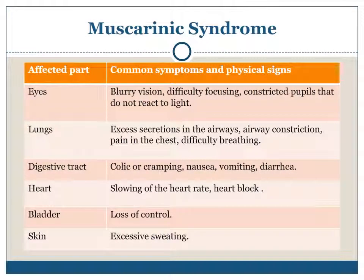Muscarinic syndrome — affected parts and common symptoms: Eyes: blurry vision, difficulty focusing, constricted pupils that do not react to light. Airways: excess secretions, airway constriction, pain in the chest, difficulty breathing. Digestive tract: colic or cramping, nausea, vomiting, diarrhea. Heart: slowing of heart rate, heart block. Bladder: loss of control. Skin: excessive sweating.